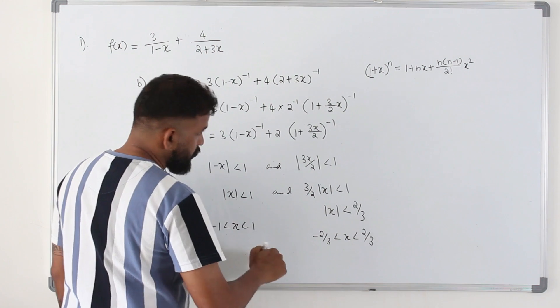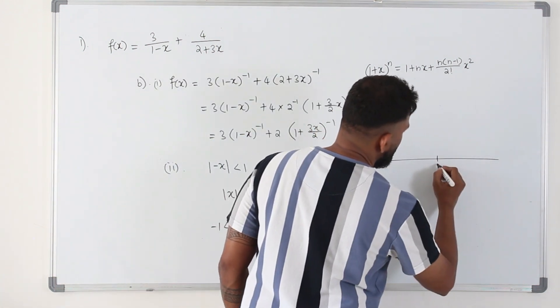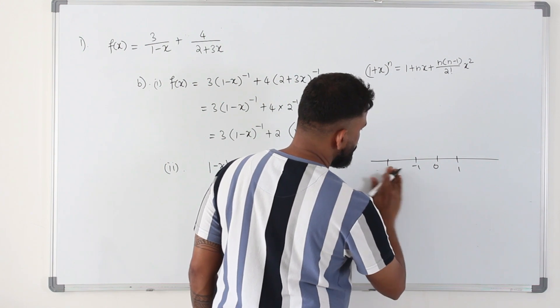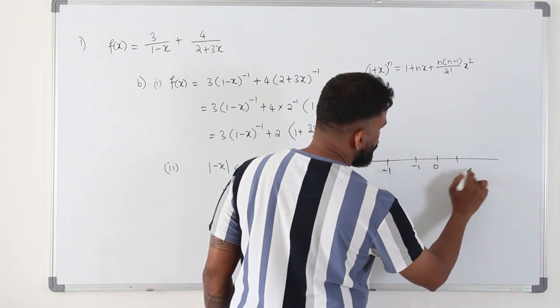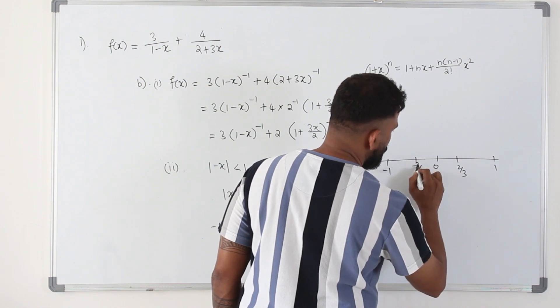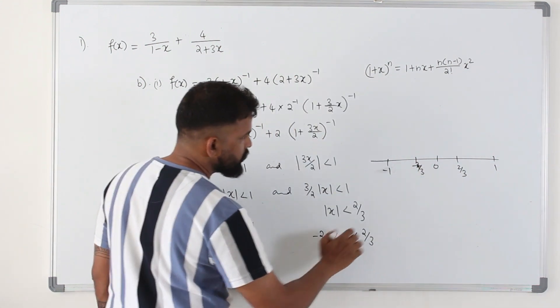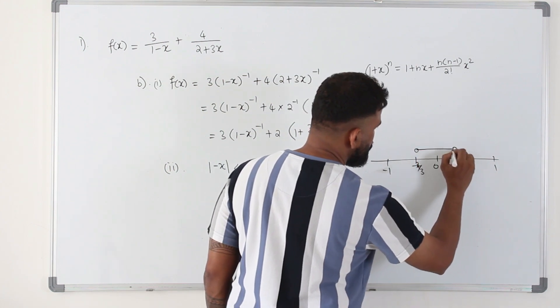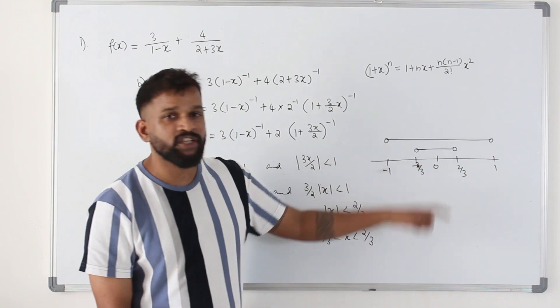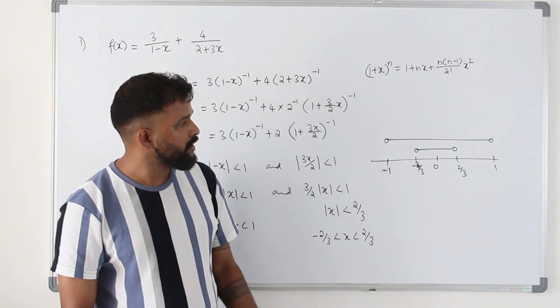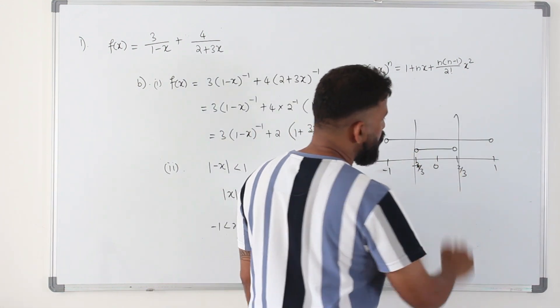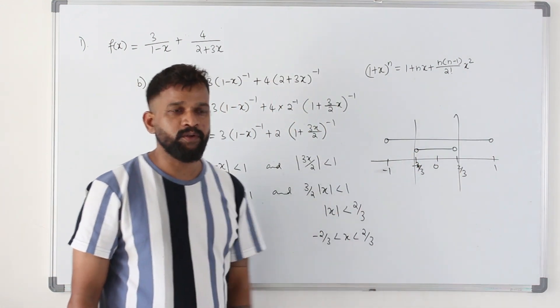So this is smaller than 1. So if you draw a number line, you have negative 1, 1 here. Negative 1, 1 here. 2 over 3, negative 2 over 3 here. So this inequality is this. Negative 1 to 1 is. You need to find the intersection of these two number lines. What is the intersection? The region where you have both number lines, which is from minus 2 over 3 to 2 over 3. That's the solution.